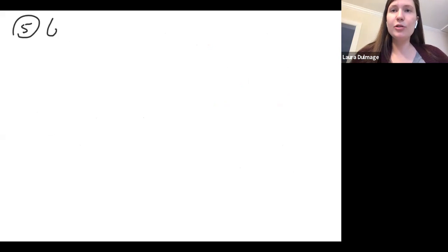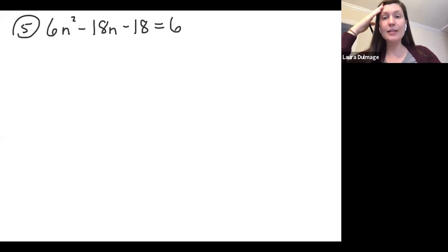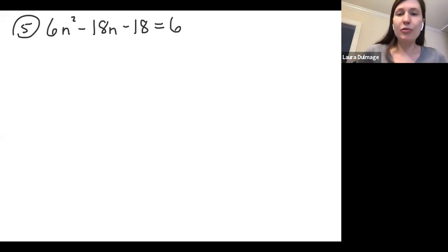Again, if you're ever confused on if this gives you the right answer, you can always plug in - let's test 2. So if we plug 2 back into the beginning, we'd have 2² which is 4 times 3 which is 12. 12 - 12 is 0. So it does work, it does give us 0, which is pretty nice.